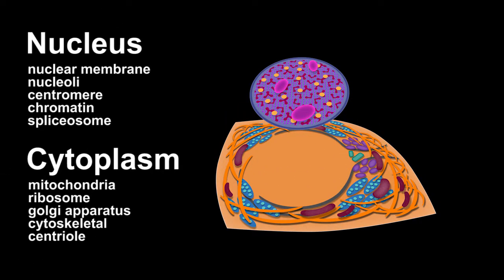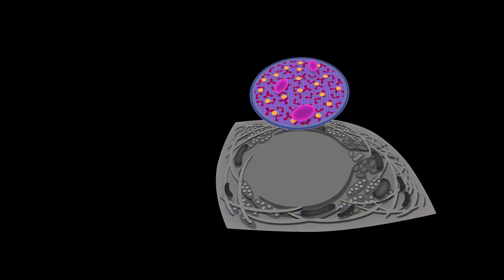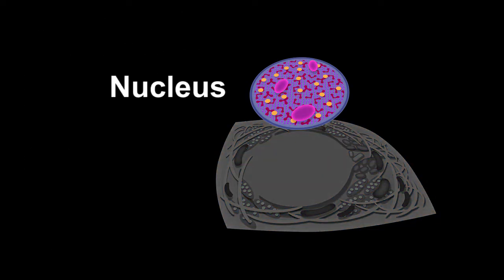Over 35 different IFA patterns, both nuclear and cytoplasmic, have been described. So let's walk through the cellular components of the HEP2 cell substrate.